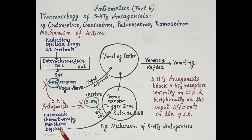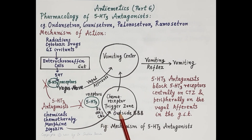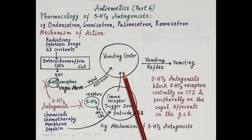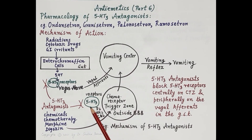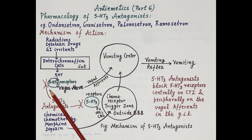Emetogenic agents like chemicals, chemotherapeutic agents, morphine, digoxin, etc. stimulate the receptors located on the chemoreceptor trigger zone, thereby stimulating the CTZ. These emetogenic impulses are further transmitted to the vomiting center, causing vomiting. 5-HT3 receptors are also located on the chemoreceptor trigger zone.